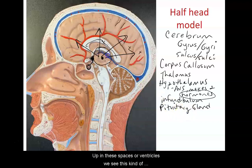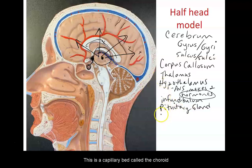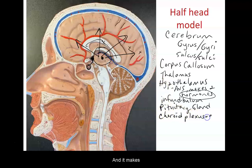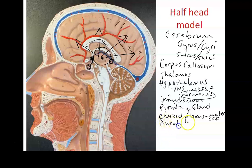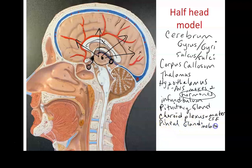Up in the ventricles we see a bluish structure called the choroid plexus, which is a capillary bed that makes cerebrospinal fluid. Right behind the thalamus is a little gland called the pineal gland, which makes a hormone called melatonin that helps regulate your sleep-wake cycle.